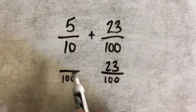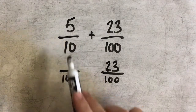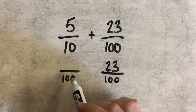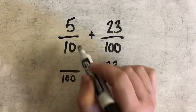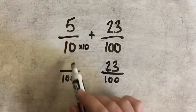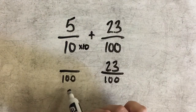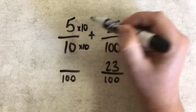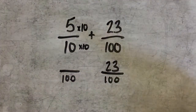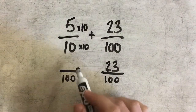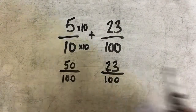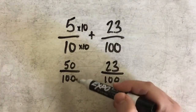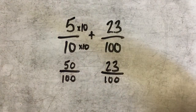However, if I'm changing from tenths to hundredths, then I did do something to my denominator. In this case, I multiplied it by 10 in order to get from 10 to 100. So if I multiply my denominator by 10, I also have to multiply my numerator by 10. 5 times 10 gives me 50. So 5 tenths is equivalent to 50 hundredths.